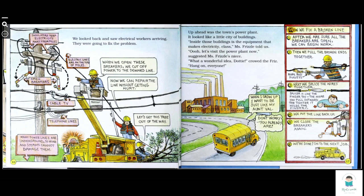Up ahead was the town's power plant. It looked like a little city of buildings. Inside those buildings is the equipment that makes electricity. Class, Miss Frizzle says, let's visit the power plant now. Suggested Miss Frizzle's niece. What a wonderful idea, Dotty. Proud of her, Friz. Hang on everyone. When I grow up, I want to be just like my Aunt Friz. Don't worry, you already are.